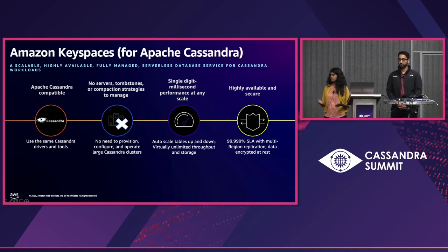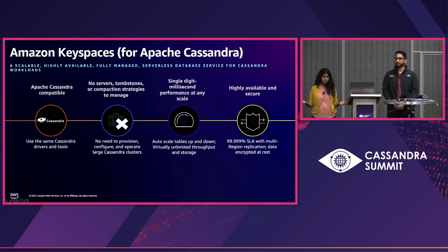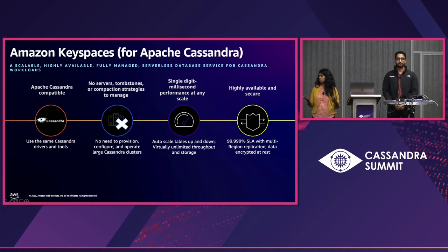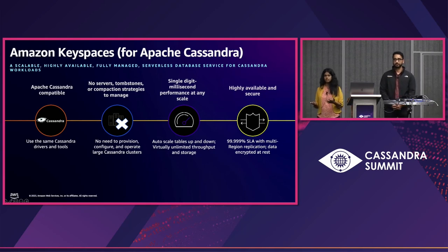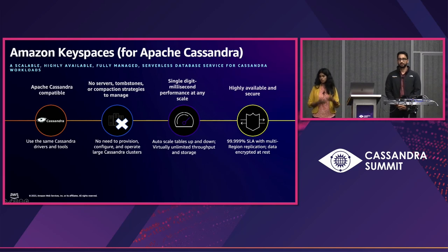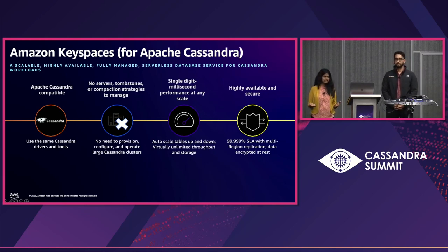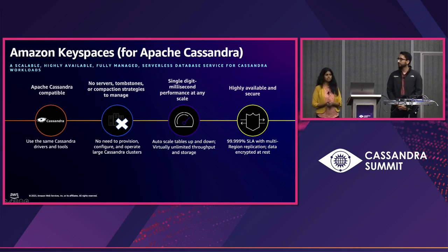Serverless also means you don't have to provision, configure, or operate large Cassandra clusters. The tables in Amazon Keyspaces automatically scale up and down depending on the provisioned mode or on-demand capacity mode you use. They scale based on the load coming in, and it's virtually unlimited scale — there is no limit on the size of the table or the number of rows.